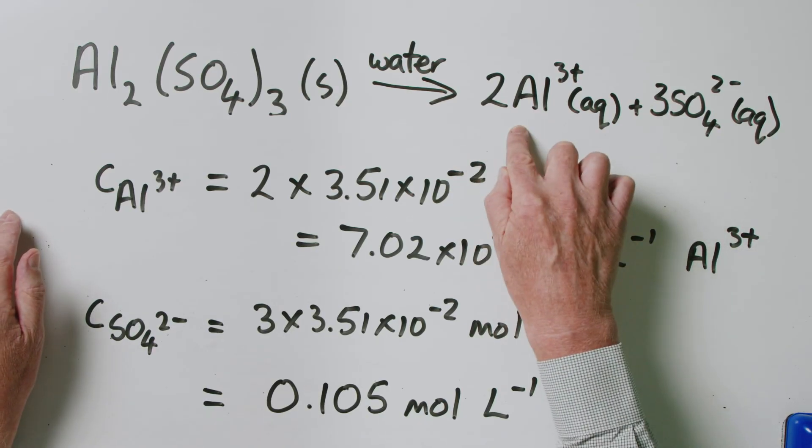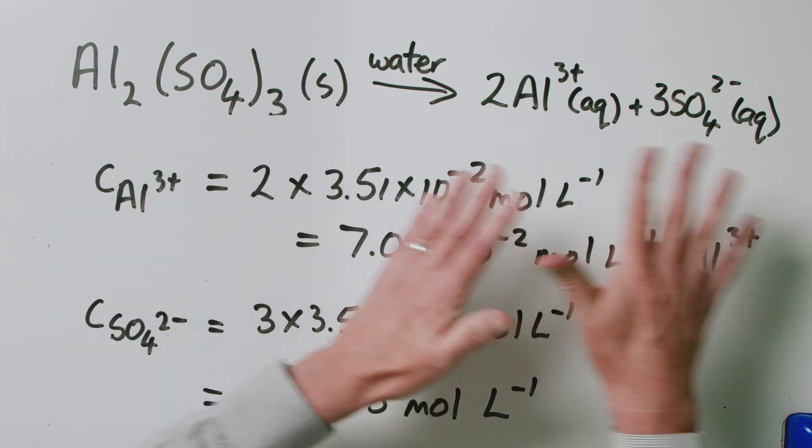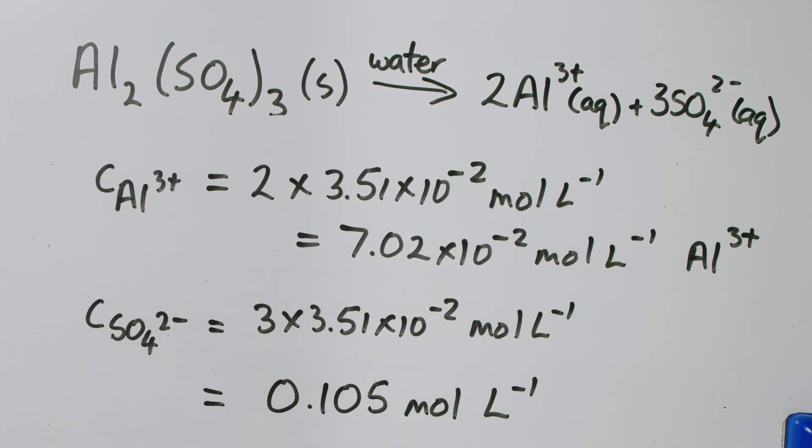This is something to be aware of when talking about solutions of ionic substances or electrolytes — anything that dissociates when put in water, breaking up into its constituent ions. The concentration you calculate for aluminium sulfate is not the same as the concentration of aluminium ions or sulfate ions. Any salt that doesn't dissolve in a one-to-one ratio will require this consideration in your stoichiometric calculations. Those are some relatively straightforward solution stoichiometry calculations — see you next time.